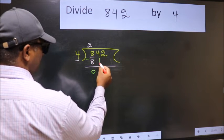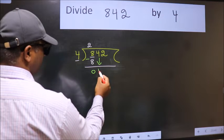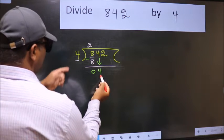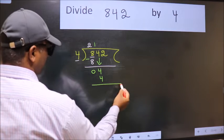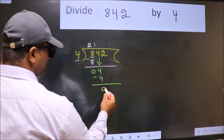After this, bring down the beside number. So, 4 down. When do we get 4 in 4 table? 4 once, 4. Now we subtract. We get 0.